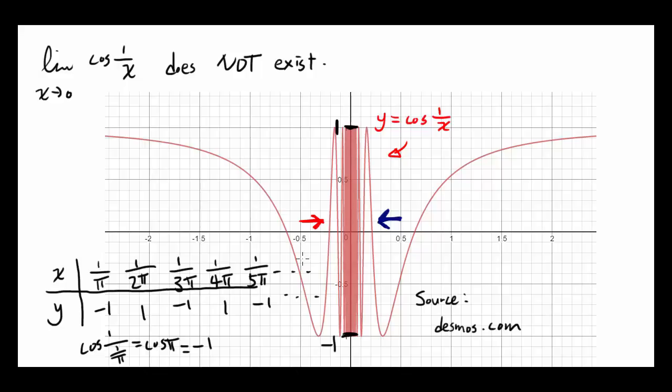And that's what's happening to the graph as you're approaching 0 from the left and the right. And if the function is oscillating between two fixed values or between two constants, and in this case negative 1 and 1, we say that the limit does not exist.